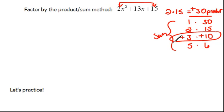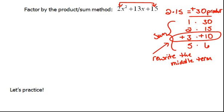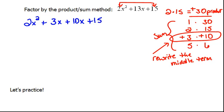Now, what we're going to do is use this to rewrite the middle term. Whenever I say middle term, I mean that 13x in this case. So I'm going to rewrite my problem as 2x squared plus, instead of 13x, I'm going to write that as 3x plus 10x plus 15. Normally we would combine these like terms, so this is 13x — I'm just writing it in a different fashion.